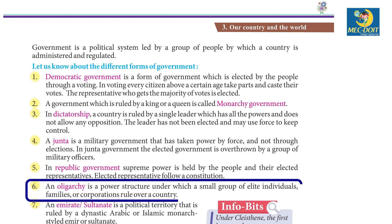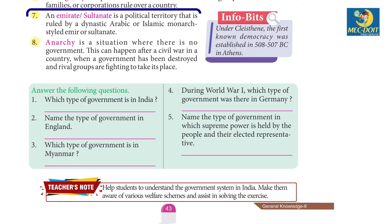6. An oligarchy is a power structure under which a small group of elite individuals, families or corporations rule over a country. 7. An emirate or sultanate is a political territory that is ruled by a dynastic Arabic or Islamic monarch styled emir or sultan.